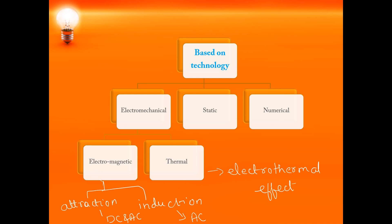Next is static relays, also known as solid state relays. These include transistors, ICs, diodes and other electronic components. Static relays have comparators which compare two different quantities and based on the signal, the relay operates. The next one is numerical relays — the latest development in the relay area — wherein you have a microprocessor-based relay or a digital signal processor-based relay. The next revolution will be intelligent numerical relays where artificial intelligence, artificial neural networks, or fuzzy logic systems will be used.